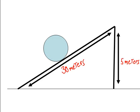Notice the inclined plane is 30 meters, and the height off of the ground to the top is 5 meters. The y-axis value is 5, and the sloped line is 30 meters.